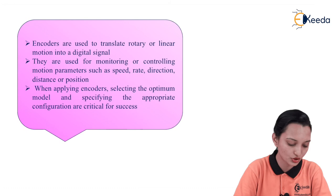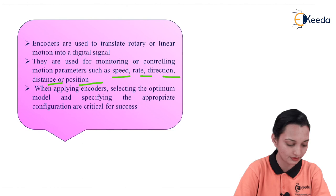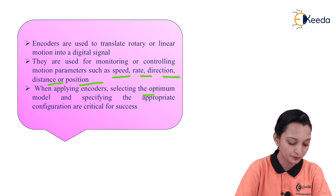Encoders are used to translate rotary or linear motion into digital signals. They are used for monitoring or controlling motion parameters such as speed, rate, direction, distance, and position. The application of this encoding algorithm includes calculation of speed, rate, direction, distance, and position. When applying encoders, selecting the optimum — meaning minimum — model and specifying the appropriate configuration are critical for success. H.261 can be used wherever motion signals need to be converted to digital signals.